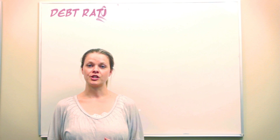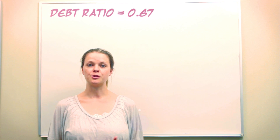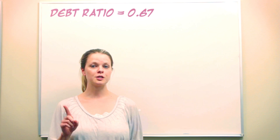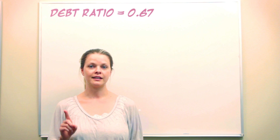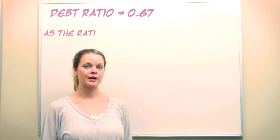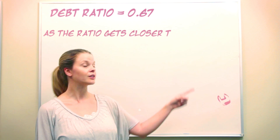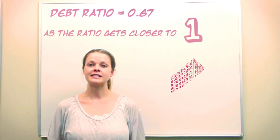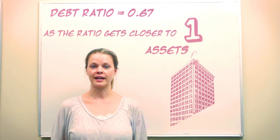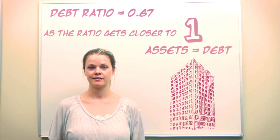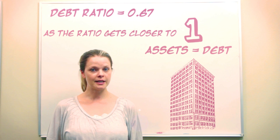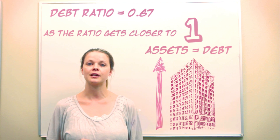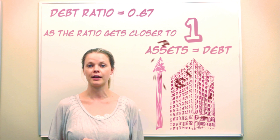Now that we have our debt ratio number, we need to put it into context. The first point to understand is that as the debt ratio gets closer and closer to one, more of a company's assets are being financed with debt. And generally speaking, as companies increase debt, they become more vulnerable to bankruptcy.